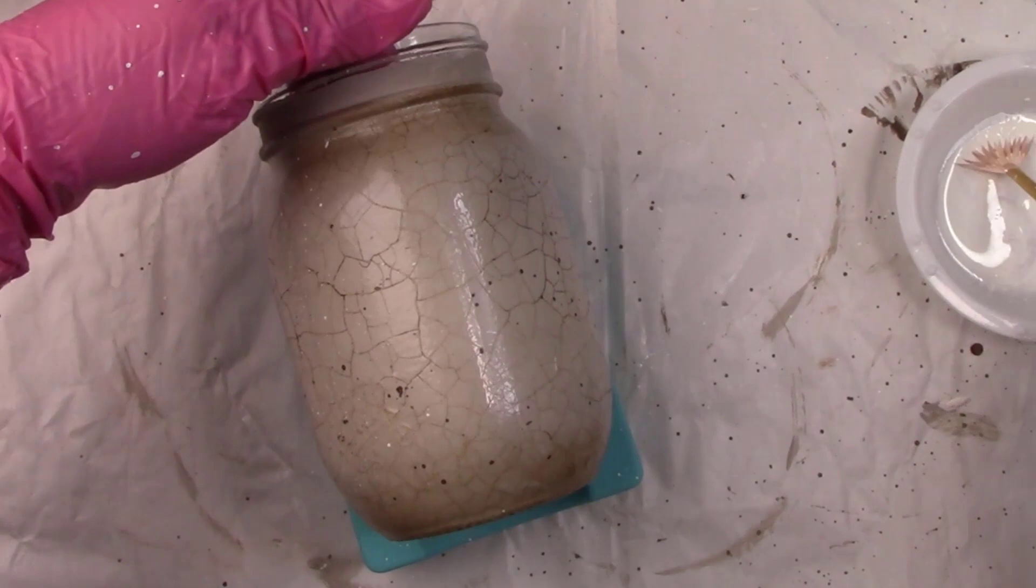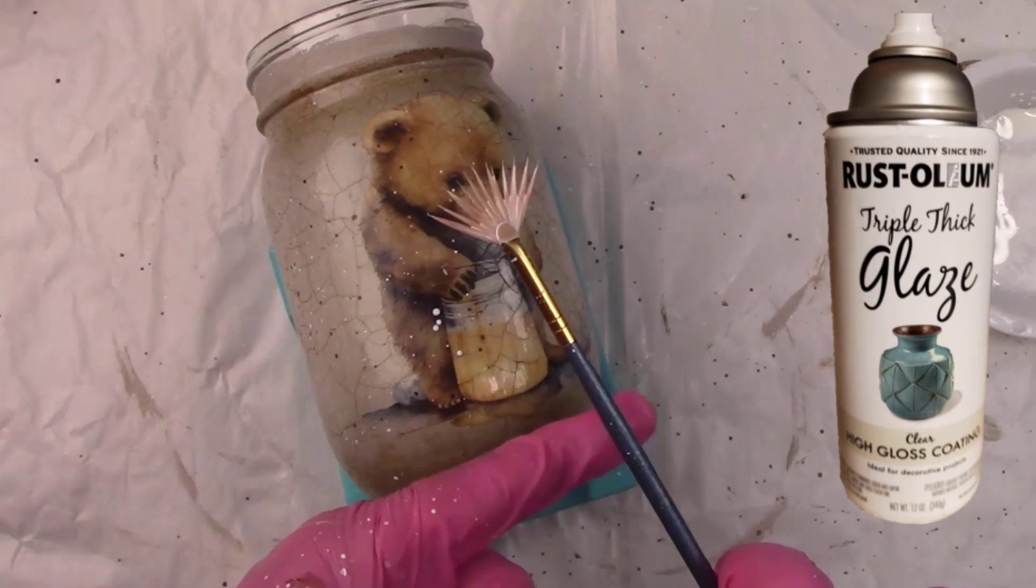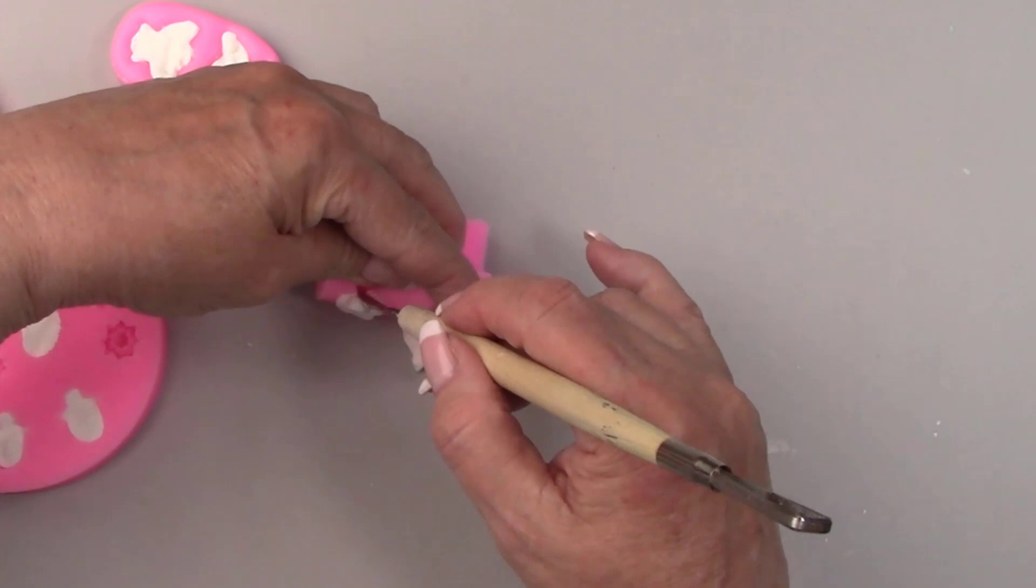I let all that dry for about an hour and then gave both jars a coat of high gloss clear spray sealer. I'm making some little bees and a honeycomb out of Delight air-dry clay.